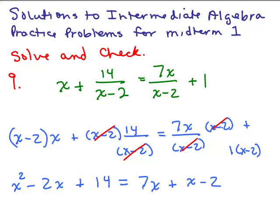Now we have a quadratic equation. To solve, I'm going to put everything on the left side and set it equal to 0. I have x squared, minus 2x, subtract 8x gives negative 10x, and 14 minus 2 plus 2 gives plus 16.